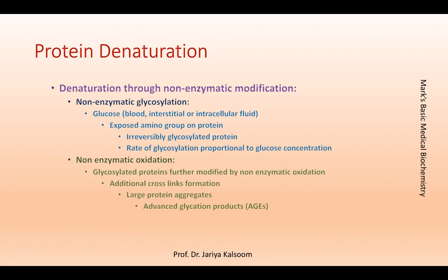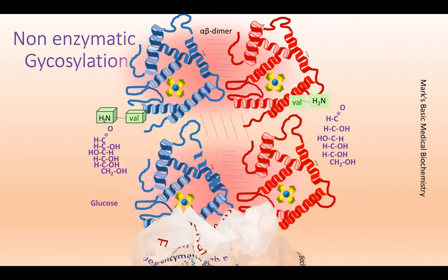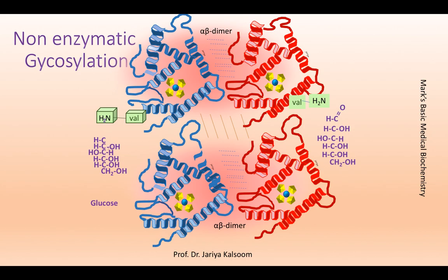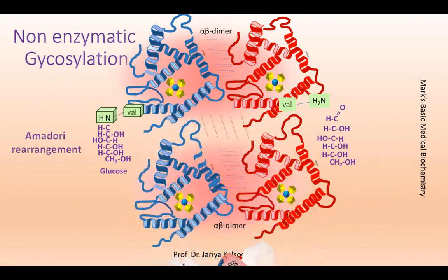During non-enzymatic glycosylation of hemoglobin, glucose forms a Schiff base with the N-terminal amino group of the protein — for example, the N-terminal valine, shown here in fluorescent green. The Schiff base then undergoes an Amadori rearrangement to form a stable glycosylated product.